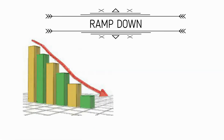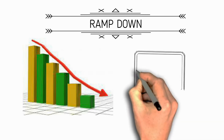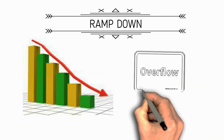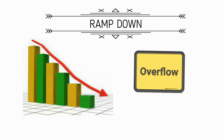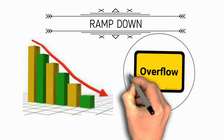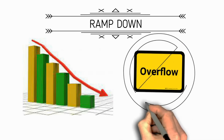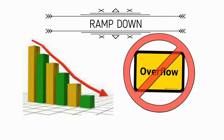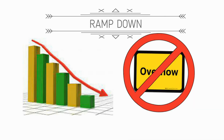Next is ramp down. Usually one hour before completion of cargo operation, the ramp down stage begins. This is where the loading or discharging rate is reduced or decreased to prevent overflowing of cargo tanks.